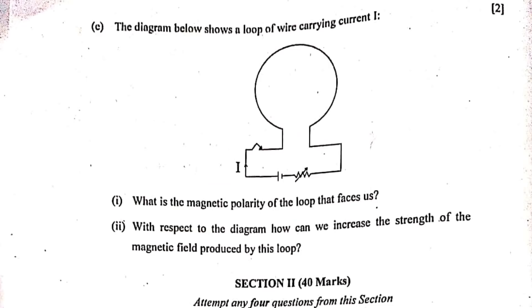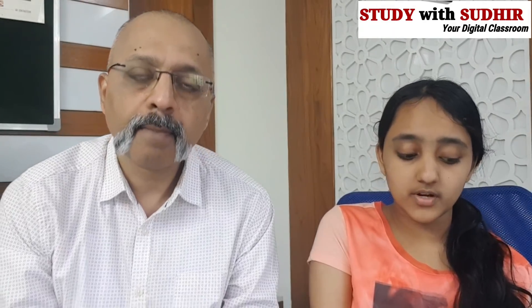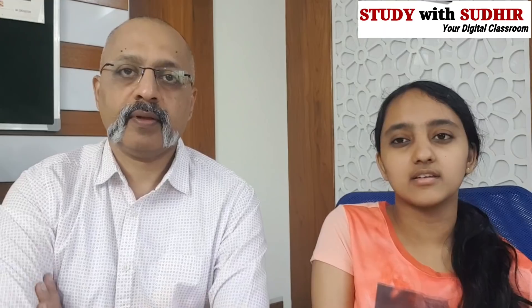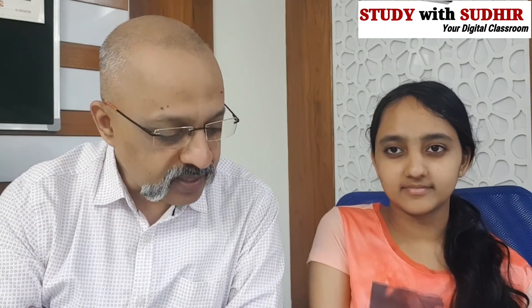Question 4e: A loop of wire carries current I — what is the magnetic polarity of the loop facing us? It is the south pole, because the current is in a clockwise direction with respect to the diagram. How can we increase the strength of the magnetic field produced by this loop? By passing more current, or by reducing the resistance in the rheostat.